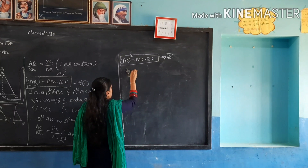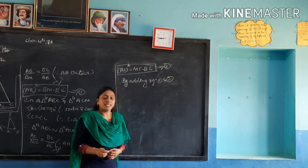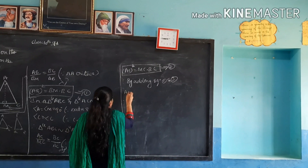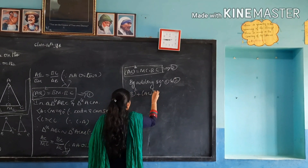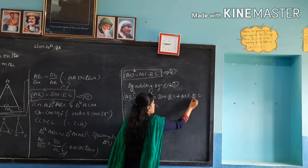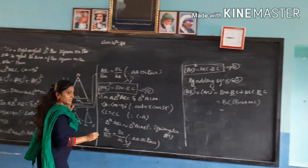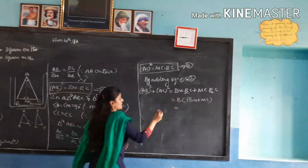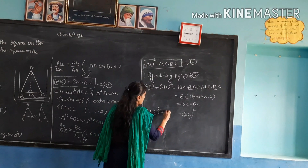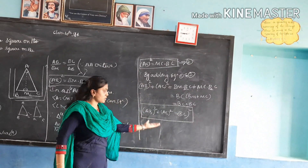By adding equation 1 and equation 2: AB² + AC² = BM × BC + MC × BC. Here BC is common, so we take it outside the bracket. The remaining term inside the bracket is BM + MC, which can be written as BC. So we get BC × BC, which equals BC². Hence it is proved. This is what we had to prove.